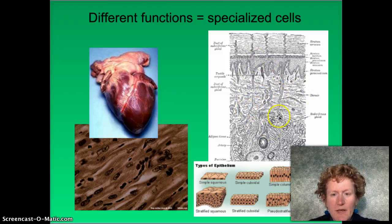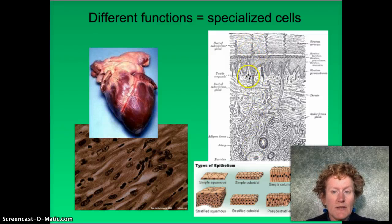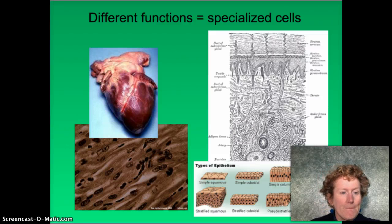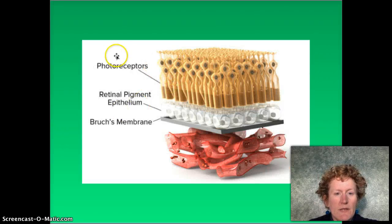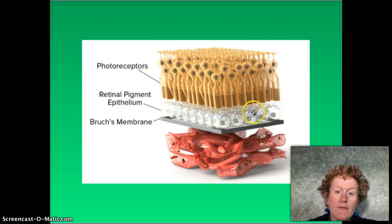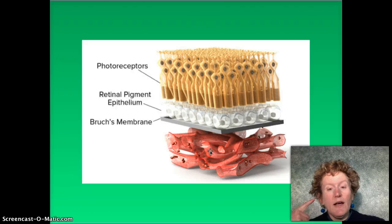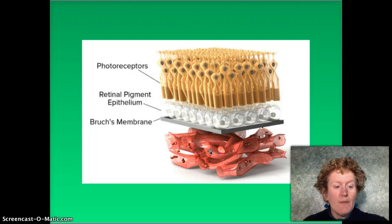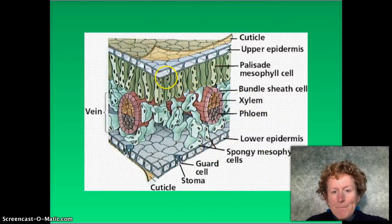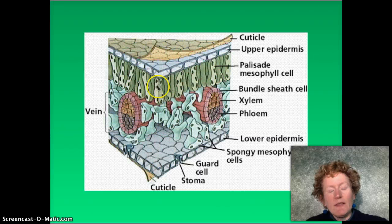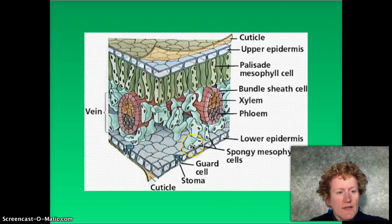Heart cells are going to look very different from eye cells, which look very different from nose cells — they perform different jobs so they need different structures. Here are your skin cells, which might be on your nose; there are lots of different types of skin cells because skin has to do lots of different jobs. Here are some cells in your eye — you can see a photoreceptor here, with layers of different kinds of cells behind it. Even your eye has lots of different kinds of cells to do that one job. Plants need specialized cells as well; a leaf has lots of different kinds of cells.